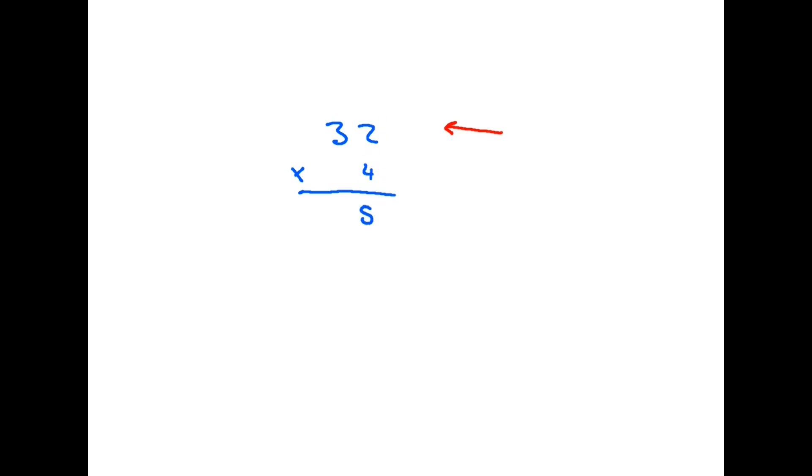Once we've done 4 times 2, we do 4 times 3, and that is 12. Since there are no other numbers here, we can simply write that in. So 32 times 4 is 128.